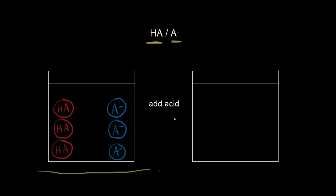To our buffer solution, we're going to add some strong acid — a source of protons. I'm going to draw a proton in here, so H plus. I could have written H3O plus, because H plus and H2O give you H3O plus. I'm just writing H plus to make it a little bit easier to think about. If you're increasing the concentration of H plus ions, or the concentration of hydronium ions in solution, you would think that would decrease the pH dramatically — and that would happen if you didn't have something to react with the protons in solution.